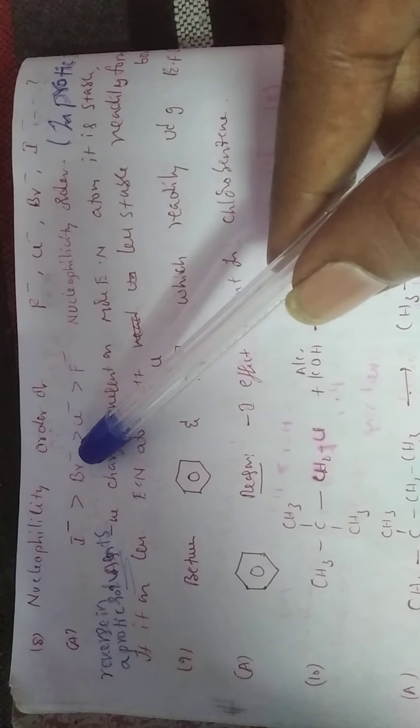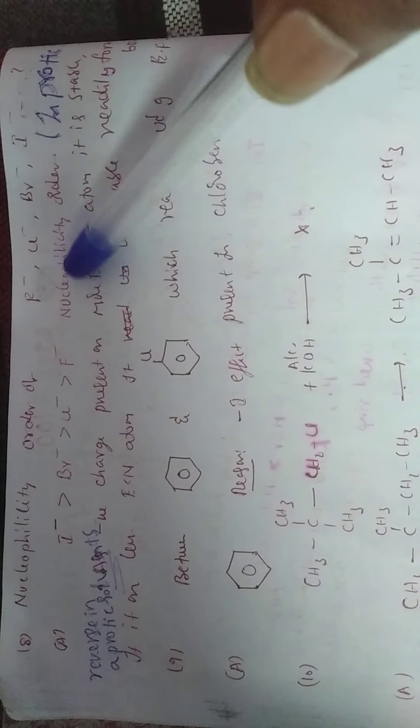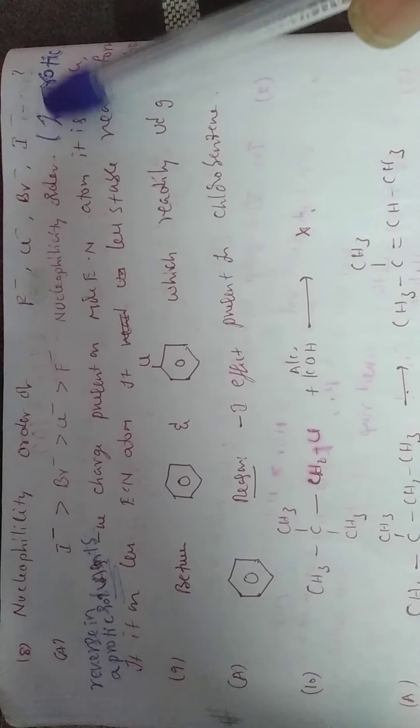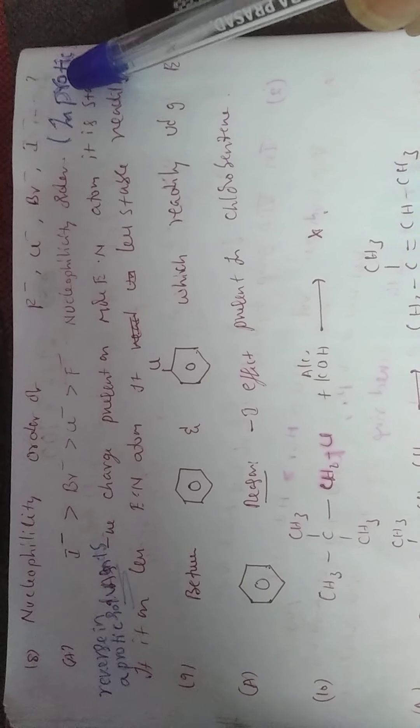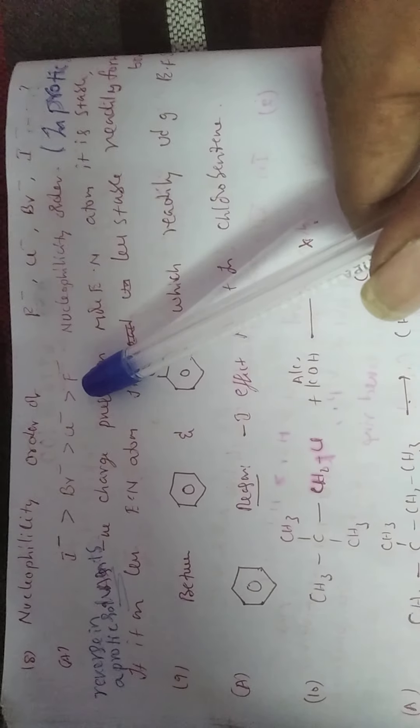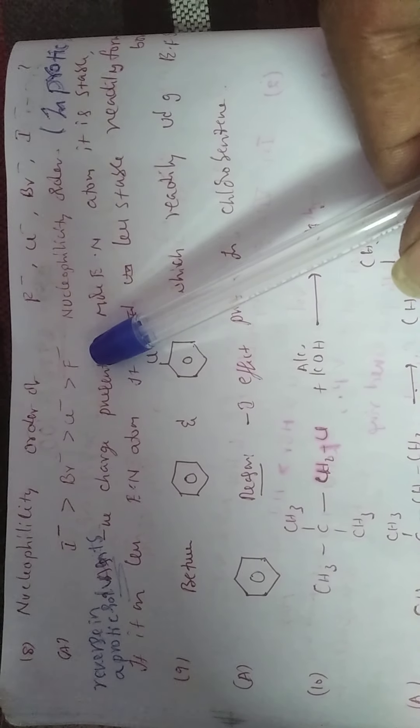I minus greater than Br minus greater than Cl minus greater than F minus. That is nucleophilicity order in protic solvents, that is important. Protic solvents means they contain H plus ion, that means water or acetic acid.